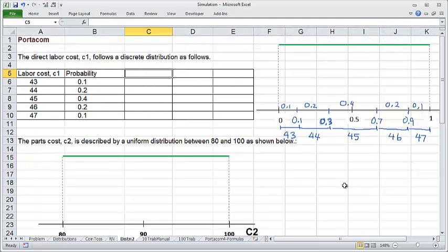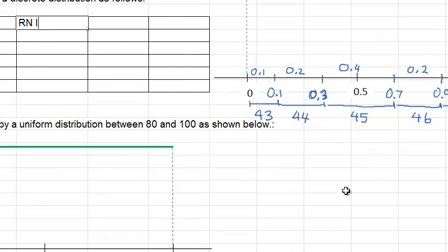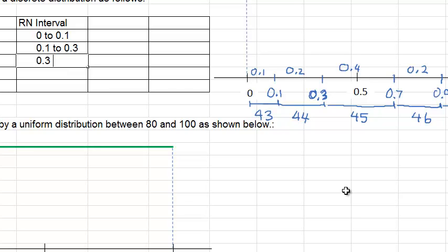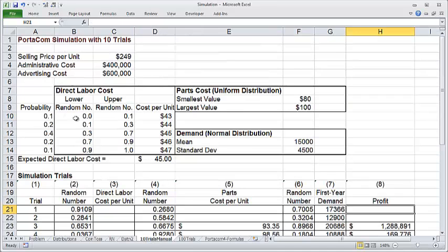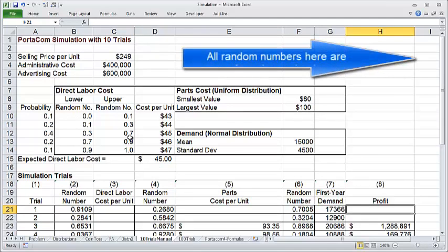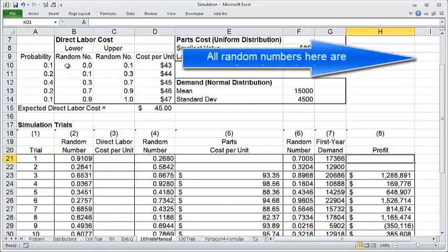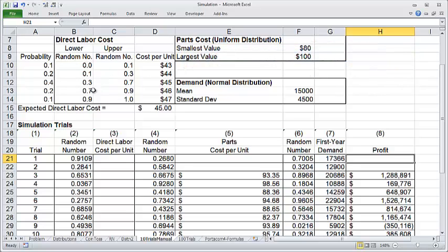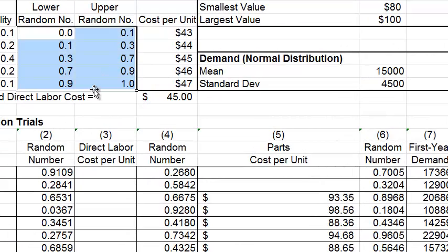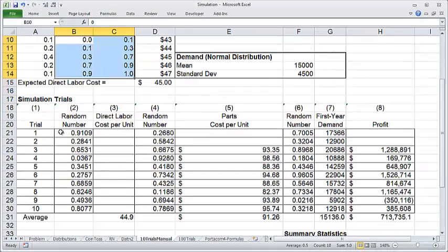The intervals we came up with here are called random number intervals. Let's write these down. The first one goes from 0 to 0.1, the second one goes from 0.1 to 0.3, 0.3 to 0.7, 0.7 to 0.9, and finally 0.9 to 1. Now in the 10 trials model, you can see how it's arranged. The intervals are arranged with lower random numbers and upper random numbers in separate columns. These are your random number intervals. And here are the costs per unit, 43 to 47.